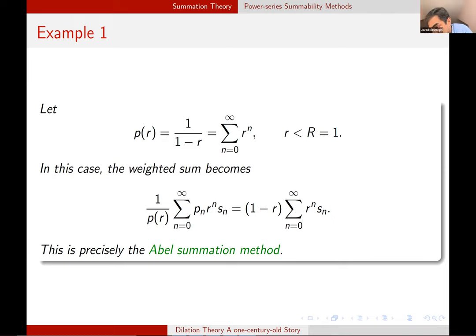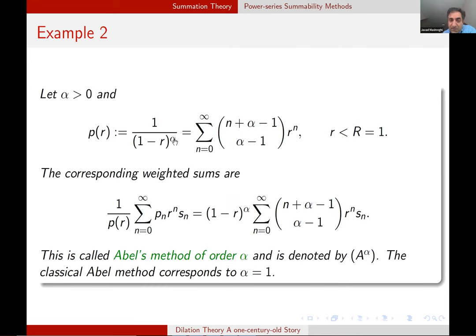Example 1, consider p of R simply 1 over 1 minus R. The development is a geometric series with radius of convergence 1. And if we apply this definition, we see that this is precisely what we saw before. It's the Abel summation method. So Abel summation method is a special case of the power series. We can say it differently. We can say that the dilation, that was the main part of my talk, is a special case in this huge series of summations.